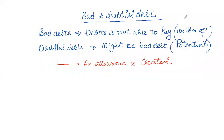Bad and doubtful debts. Bad debts are debts that the customer is not able to pay — where it is completely declared that a person or entity has become bankrupt. In this case, we have to write off, which means we eliminate the debt and record a loss.